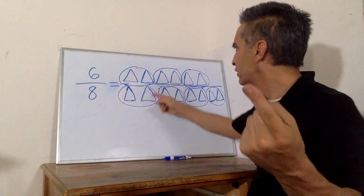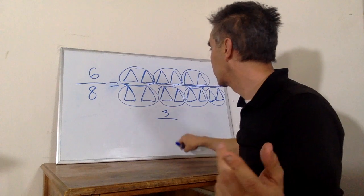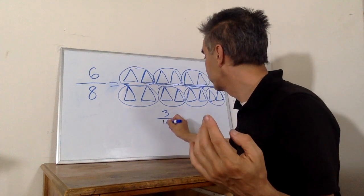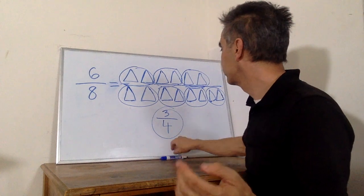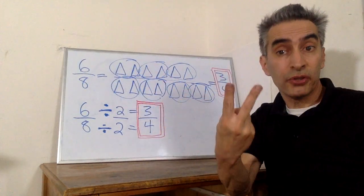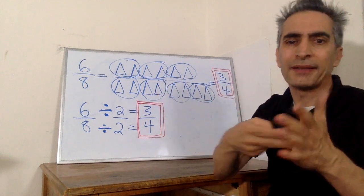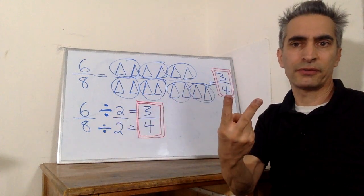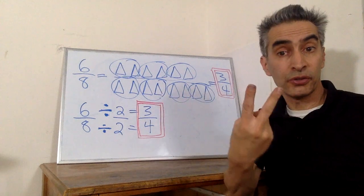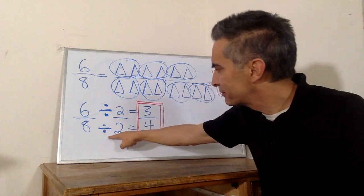Perfect. What is our answer? One, two, three groups on top. And on the bottom, one, two, three, four groups. Our answer is three-fourths. You see those groups of two in the numerator? And those groups of two in the denominator? What does all that mean? It means you're dividing by two. Answer is the same.